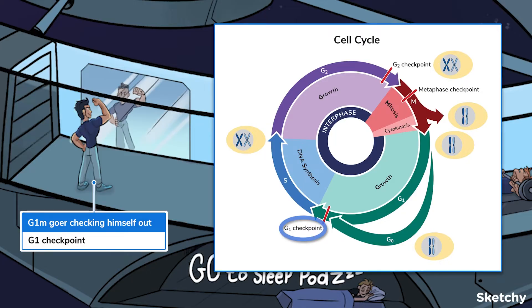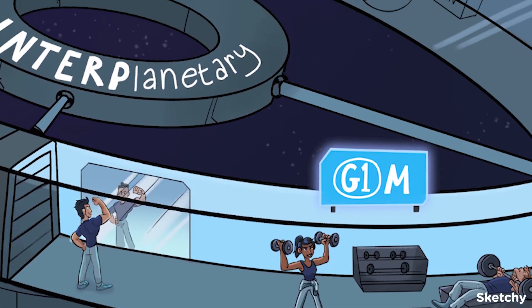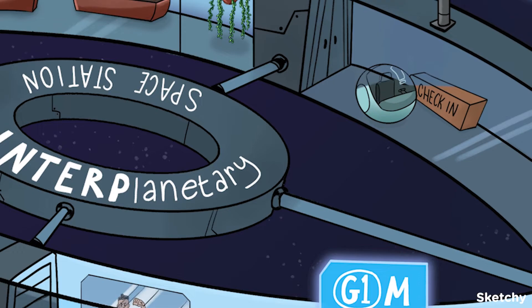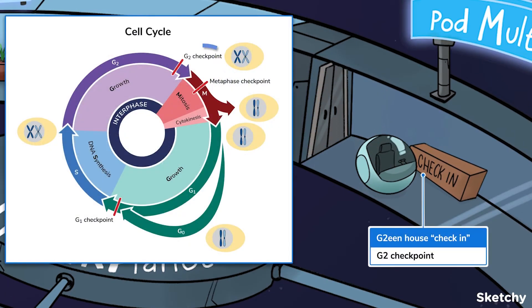Alright, one checkpoint down, two more to go. The G2 checkpoint comes at the end of G2. It makes sure the cell has grown sufficiently and replicated all the organelles to support two daughter cells in preparation for mitosis.